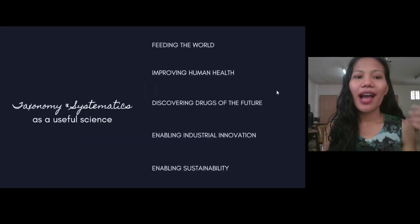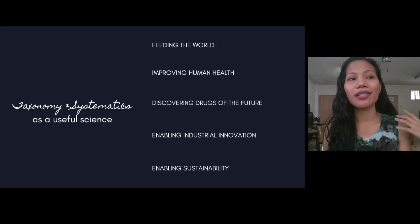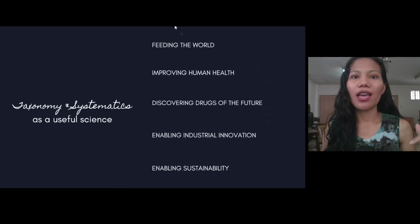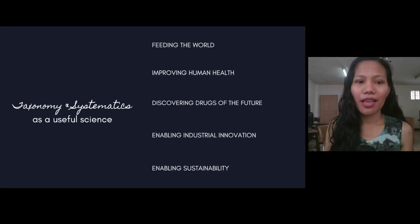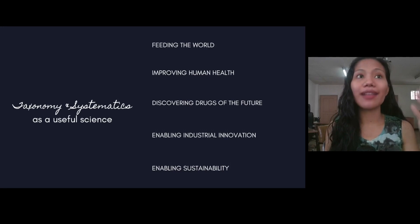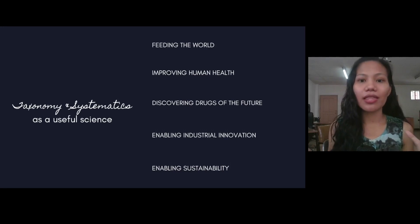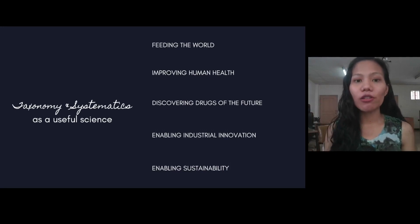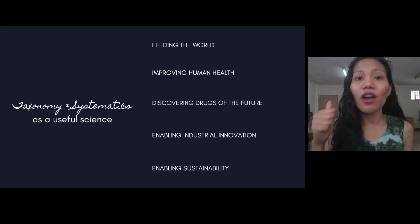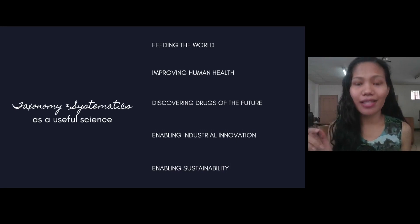How does taxonomy and systematics help the real world? First, it helps in feeding the world. When we are able to identify the taxonomy of pests and pathogens, especially in agricultural science, we are also able to identify the causes of crop decline.